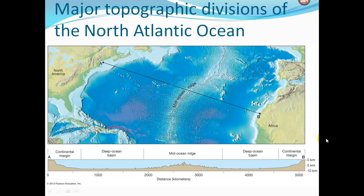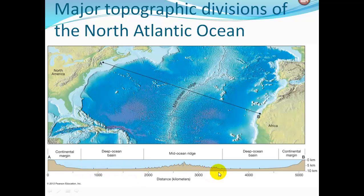Looking at the major topographic divisions of the North Atlantic Ocean in a profile mapped from A to B, we can see the elevations or bathymetry across the ocean. Near the two continents we have the continental margin, then deep ocean basins on either side, and in the middle we have the mid-ocean ridge — this mountainous terrain underwater.